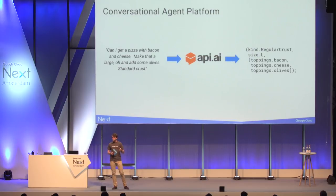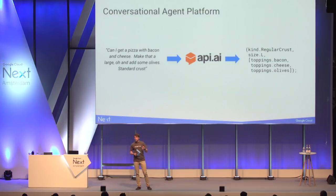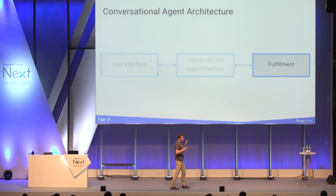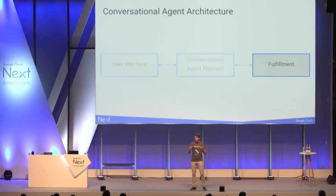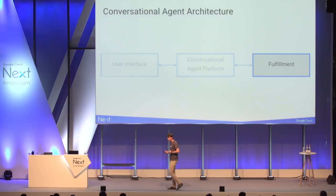API.AI was a company we acquired less than one year ago, and it's one of the top-used platforms for building chatbots. About 30 to 40 percent of the room are already aware of it. Once we've figured out what the user actually wants, we also have to make it happen — that's the fulfillment side, your back-end. On Google Cloud Platform, we have some very interesting options.